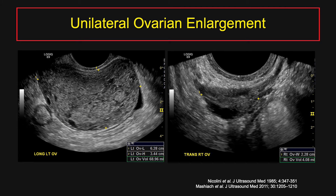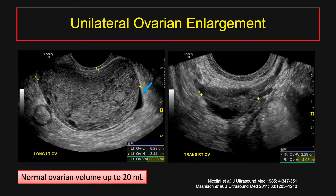Let's look at some of the morphologic findings of ovarian torsion, beginning with a common finding: unilateral ovarian enlargement. This is a case of a 20-year-old woman with left ovarian torsion proven at surgery. You'll notice marked asymmetric enlargement of the left ovary, which is edematous with a small amount of free fluid adjacent to it, compared to the normal-sized right ovary. The left ovary measures about 70 ml and the right 4 ml. The average volume in a premenopausal woman is about 10 ml, but can range up to 20 ml within normal limits.